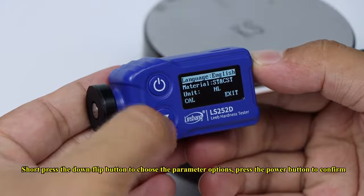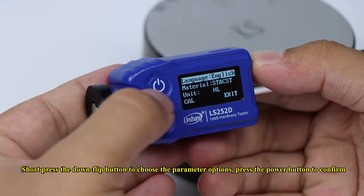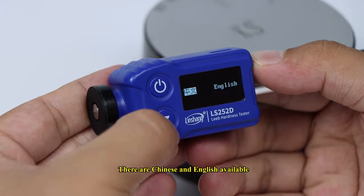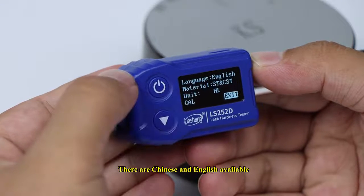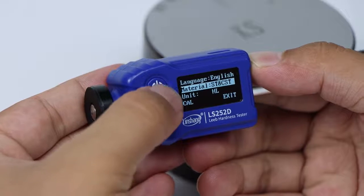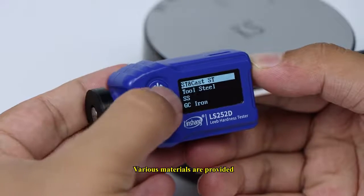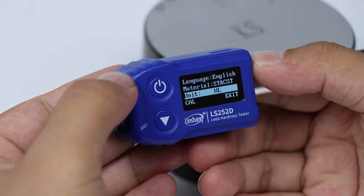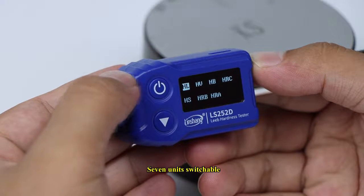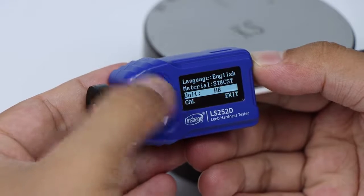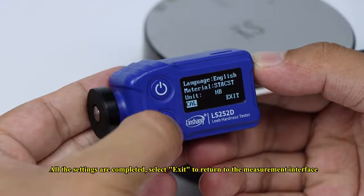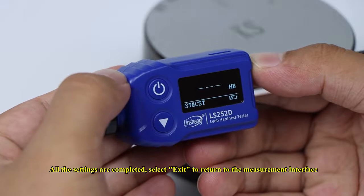Short press the down flip button to choose the parameter options. Press the power button to confirm. There are Chinese and English available. All the settings are completed. Select exit to return to the measurement interface.